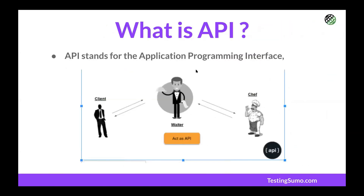What is an API? API stands for Application Programming Interface. It's similar to a waiter in a restaurant: a client asks for food, the waiter takes the order, goes to the chef, the chef prepares the food, and the waiter delivers it back to the client. The waiter acts as the intermediary between the client and the kitchen.